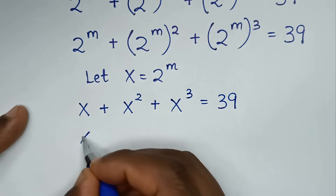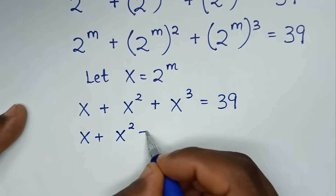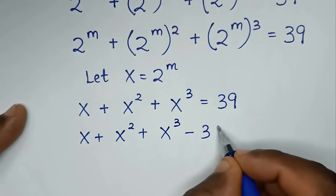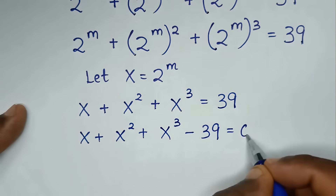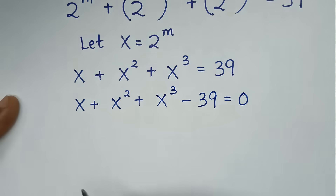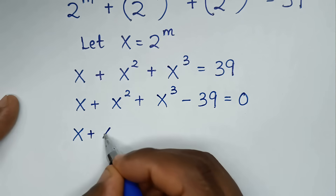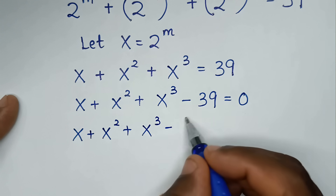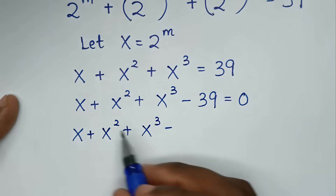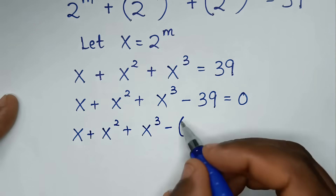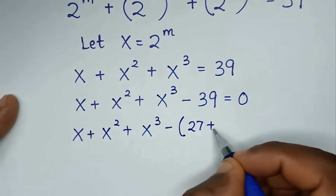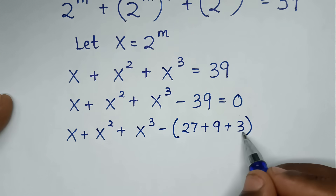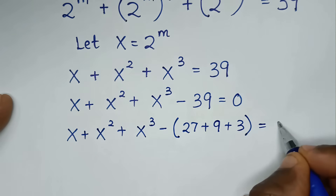Then it will be x plus x squared plus x power of 3 — taking 39 to this side to be minus 39 — is equal to 0. Then it will be x plus x squared plus x power of 3 minus 39. We split according to these exponents, so here 39 is the same as 27 plus 9 plus 3. 27 plus 3 is 30, 30 plus 9 is 39, is equal to 0.